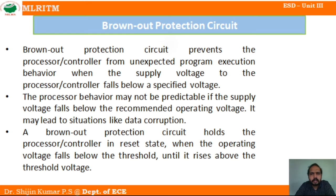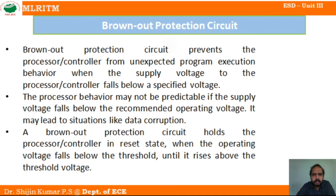The brownout protection circuit prevents the processor or controller from unexpected program execution behavior if the supply voltage falls below a specific voltage level. We fix a particular threshold voltage level, and if the voltage falls below that level, the brownout protection circuit has to act in order to protect the circuit.